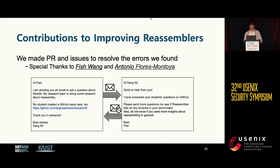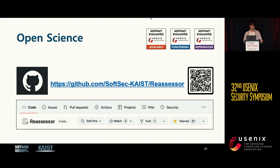We reported our findings to the authors of the tools to improve the current state of the art. In particular, we created pull requests and eight issues in their repositories. We would also like to express our gratitude to the authors of current reassemblers, especially Fish1 from Arizona State University and Antonio from GrammaTech, for their support in understanding and fixing their tools. To support open science, we released the source code of Reassessor and our dataset on GitHub.